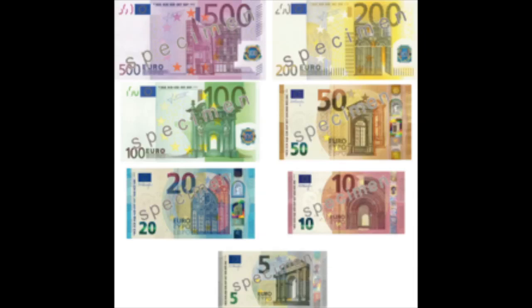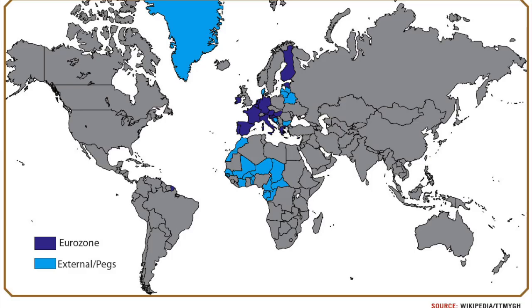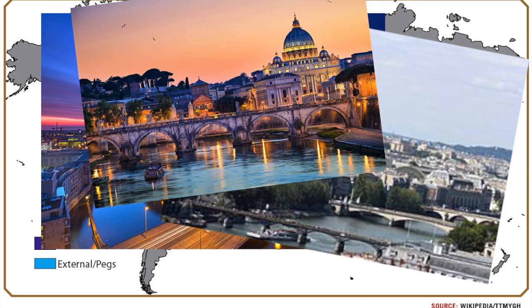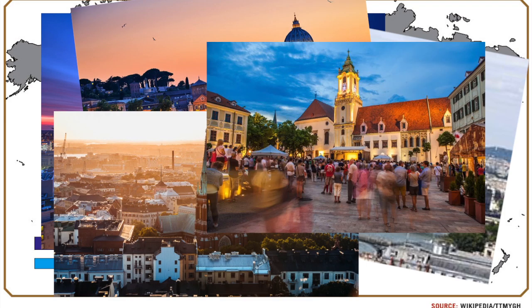The Euro, praised or not, has become one of the most important currencies in the world, being the sole legal tender in more than 20 countries. The Euro is the sole currency of countries including Germany, France, Italy, Finland, and Slovakia — all very different countries with very different histories and symbols.